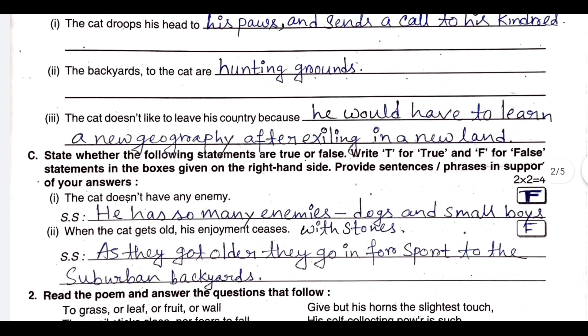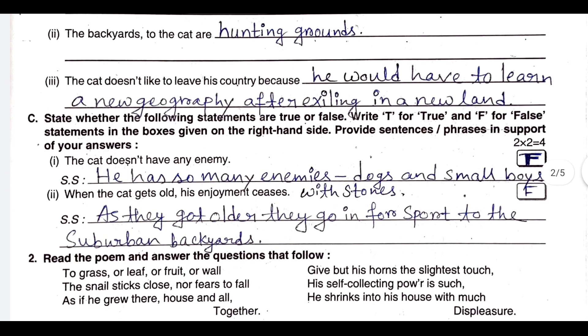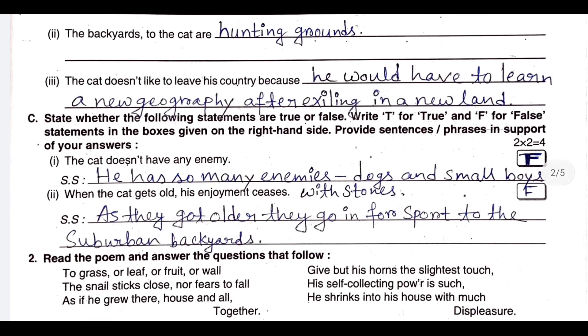True or false among the supporting statements. The cat does not have any enemy — this is false. What is the supporting statement? He has so many enemies: dogs and small boys with stones.